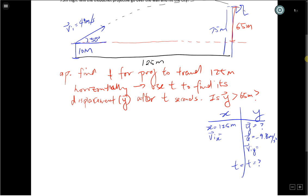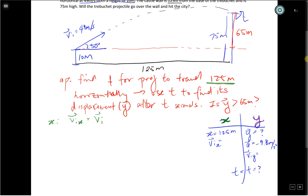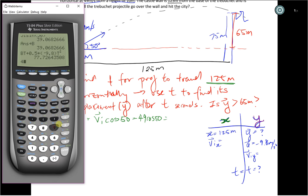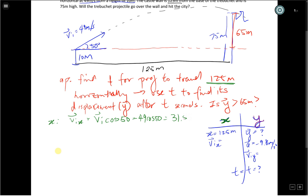Why don't we start off with the horizontal ones to help us find t after traveling 125 meters. I'm going to use green for our horizontal and purple for our vertical, to keep things a little bit more clear. In our horizontal direction, in order to find the Vix, we need our initial velocity times cosine of 50. This one is 49 times cosine 50, giving us 31.5 meters per second.